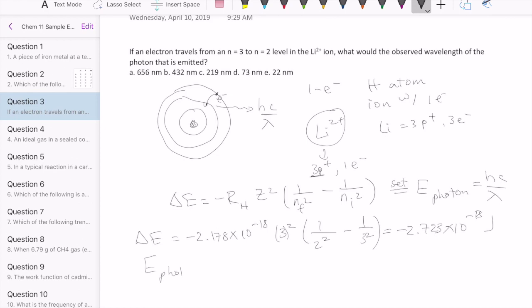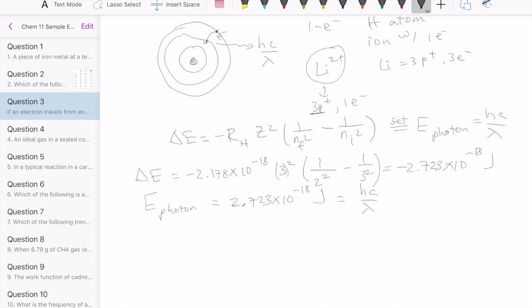That means that the energy that the photon would come out with would be that value, but then it will be positive. The way you think about that is you can say that the photon absorbs the energy from the electron. That's why it's positive for the photon. This should equal hc over lambda.